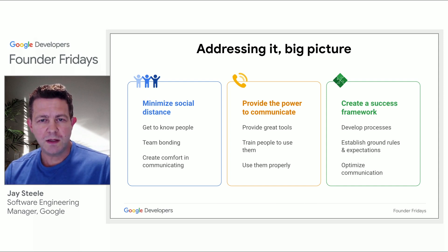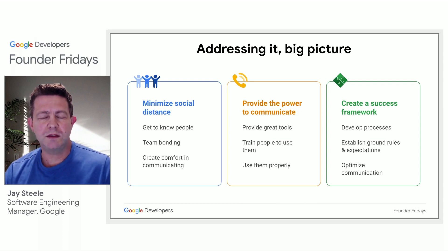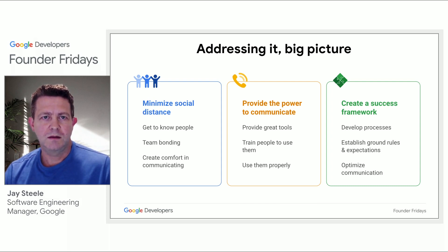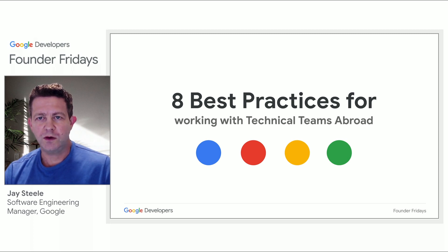The reason you want to minimize social distance between people is so you can give them the comfort and confidence to communicate. The reason you give people infrastructure and tools is so they have the means to communicate. And the reason you build interaction frameworks is to ensure that the communication has guardrails and purpose. So let's drill into eight best practices for working with technical teams abroad, all of which follow those three themes I described previously.